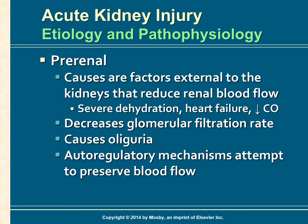The pre-renal causes of AKI are factors external to the kidneys. These factors reduce systemic circulation and cause a reduction in renal blood flow. The most common problems leading to AKI are hypovolemic shock and heart failure — for example, severe dehydration, heart failure, and decreased cardiac output. In pre-renal oliguria, there is no damage to the kidney tissue or parenchyma.